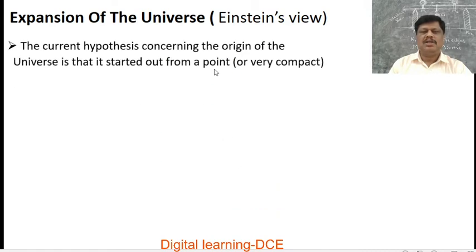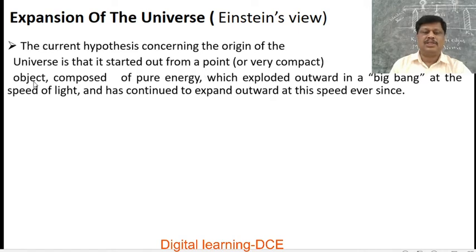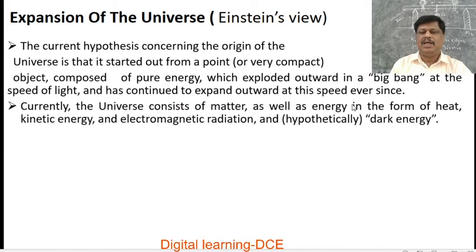Expansion of the universe according to Einstein's view. The current hypothesis concerning the origin of the universe is that it started out from a very compact, dense point object composed of pure energy, which exploded outward in a Big Bang at the speed of light and has continued to expand outward at this speed ever since. Currently, the universe consists of matter as well as energy in the form of heat, kinetic energy, electromagnetic radiation, and hypothetically dark energy.